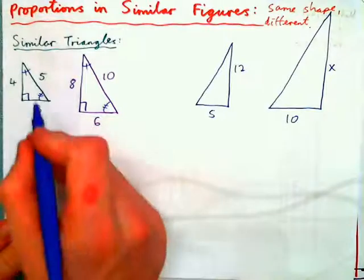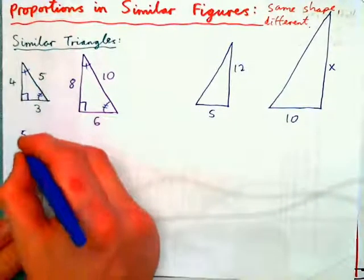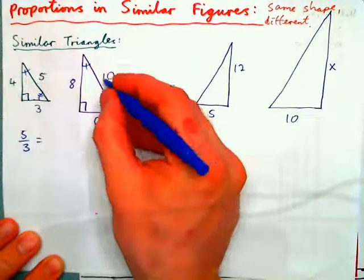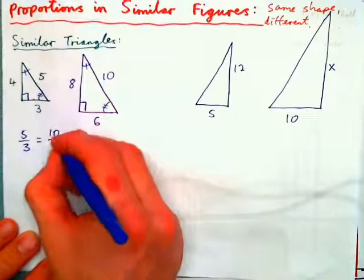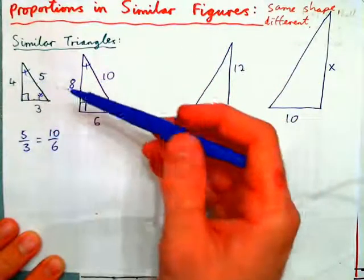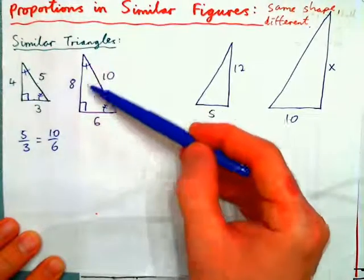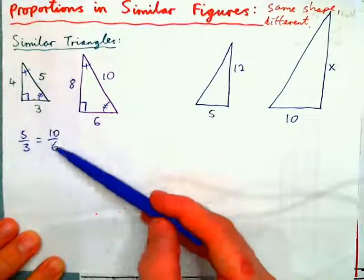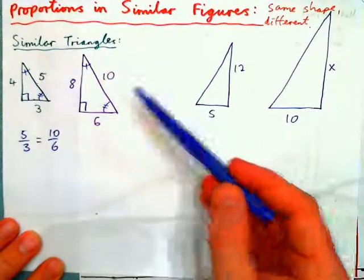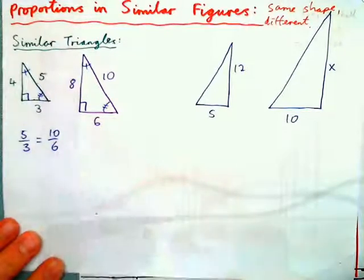What does that mean? If you take this length here — 5 — then 5 over 3 is equal to 10 over 6. Because if the figures are of exactly the same shape with the same angles, you can form a proportion from the ratio of the lengths of any two sides. Just like this: 5 over 3 equals 10 over 6.